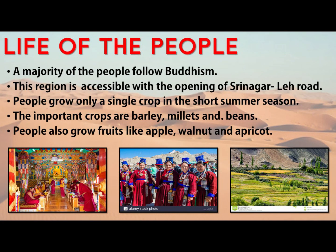Life of the people in Ladakh region. The main river is the Indus, and most of the population is concentrated around the banks of the Indus river. The majority of people follow Buddhism. The region is accessible throughout the year with the opening of the Srinagar–Leh road. Agriculture is the main occupation of the people. They face a very short summer season and grow only a single crop. The main crops grown are barley, millet, and beans. People also grow fruits like apple, walnut, and apricot.